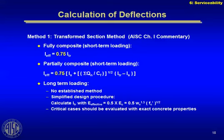Some engineers try to calculate the creep deflection by using a modulus of elasticity of 50% of normal E, as an estimate of the long-term loading. There's no established method or code procedure for this — most programs use a simplified approach. For a partially composite beam, the moment of inertia gets reduced depending on the degree of composite action. The equation for that includes the summation of Q from the studs, which gives an estimate — albeit a rough estimate — of the change in moment of inertia as a result of the degree of composite action.